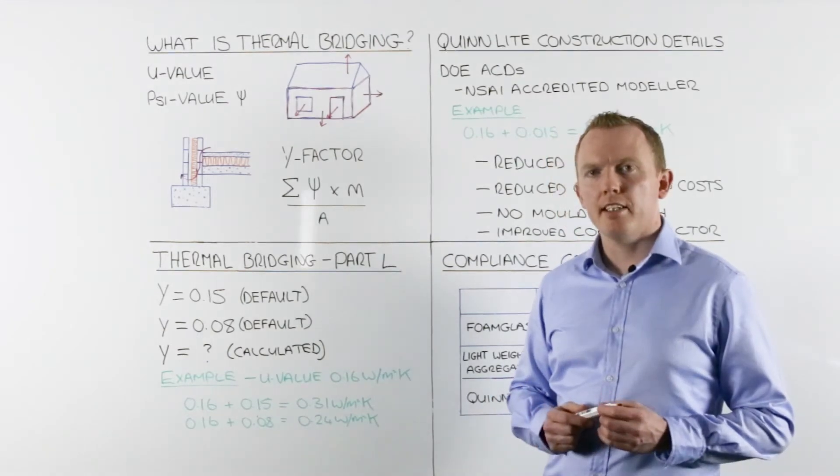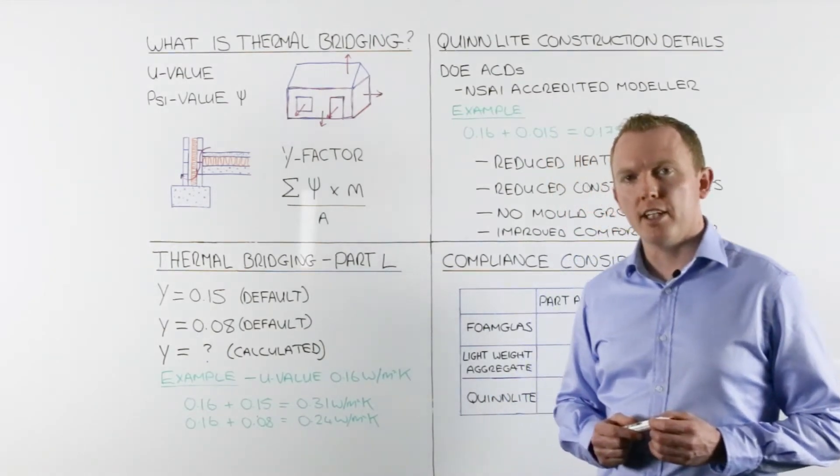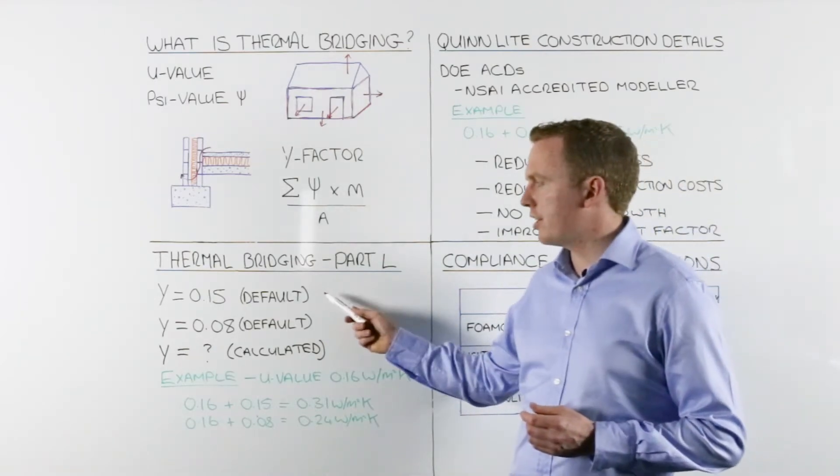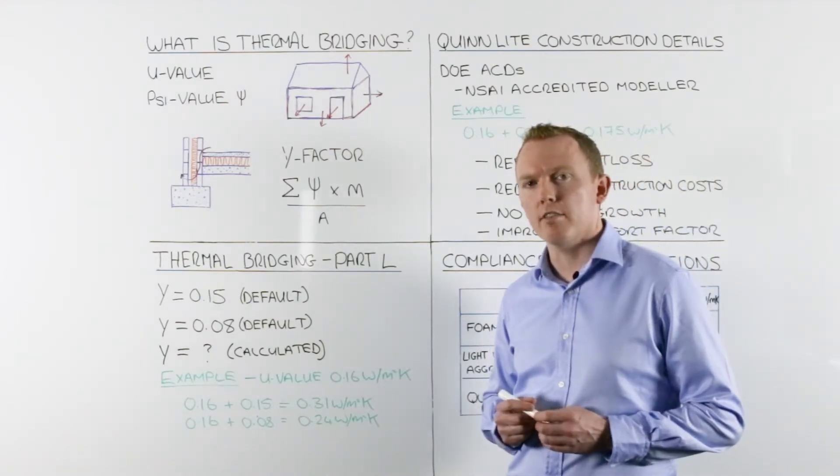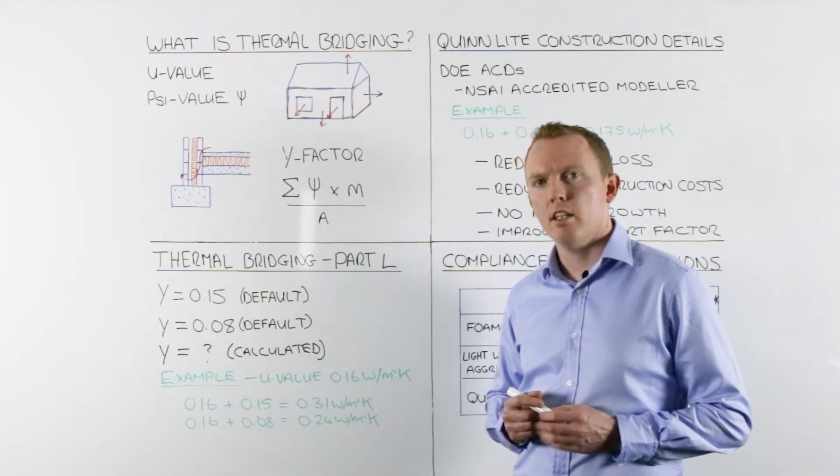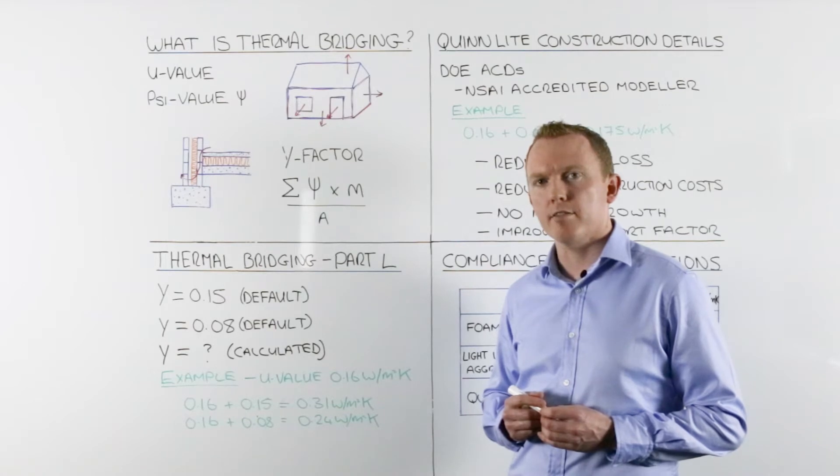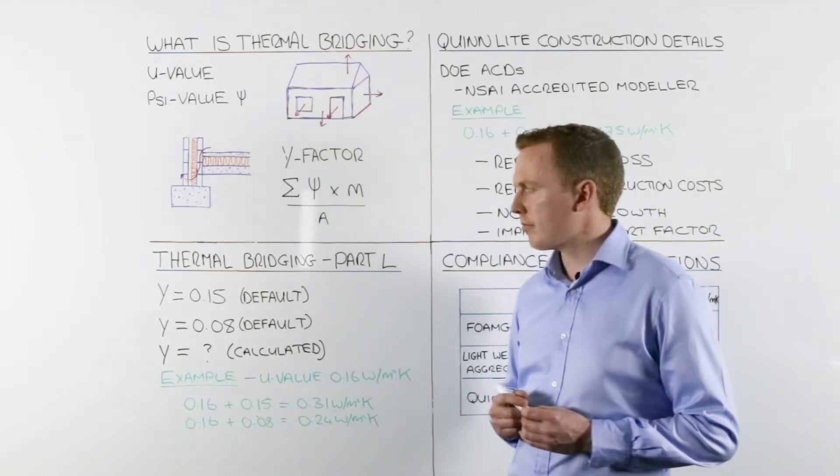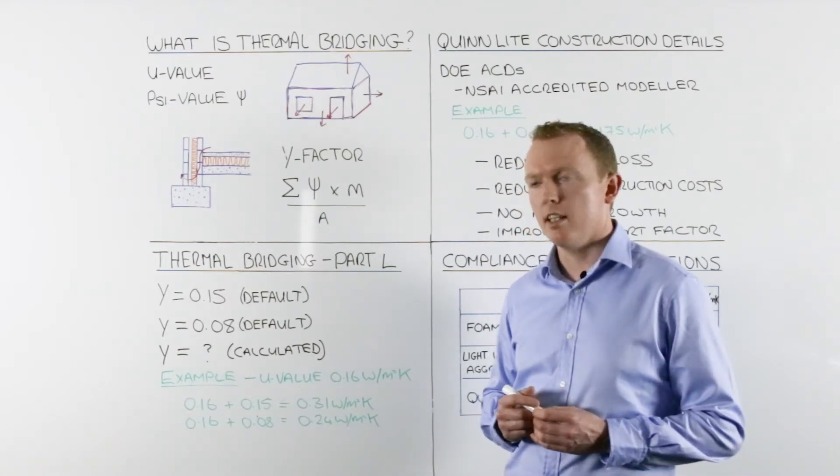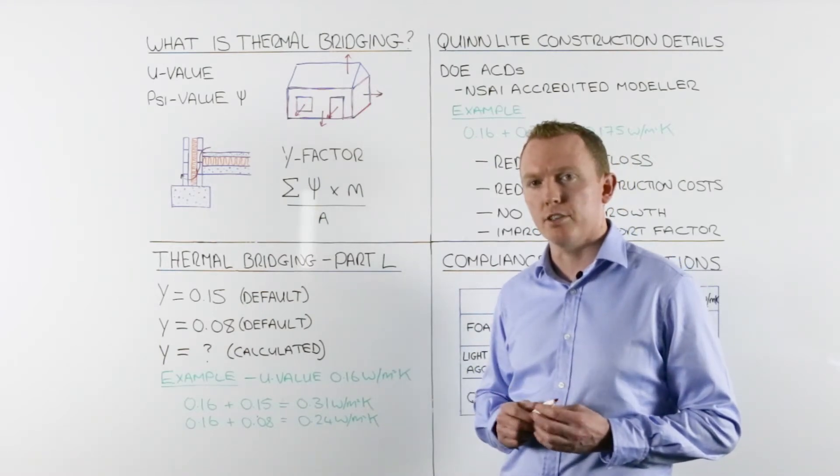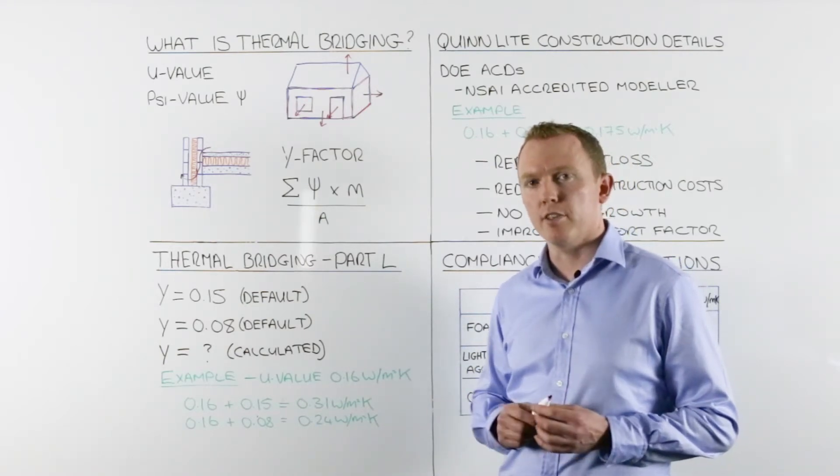So how then do we deal with thermal bridging within Part L? Basically, we have three options. The first option is to use a default Y-factor of 0.15. We would use this factor if we didn't follow any set of construction details. But in almost all cases, 0.15 is a gross overestimation of the heat loss through thermal bridging and it should be avoided.